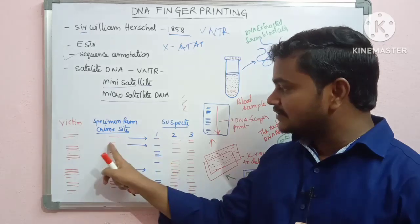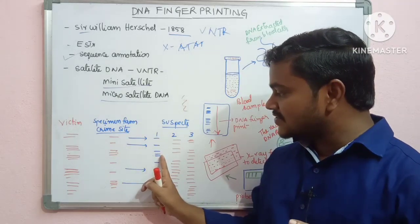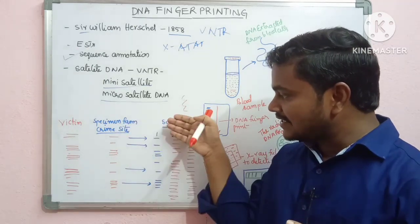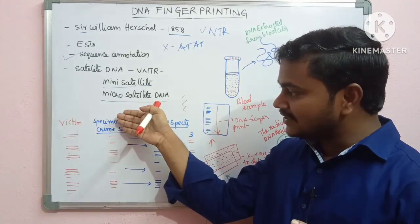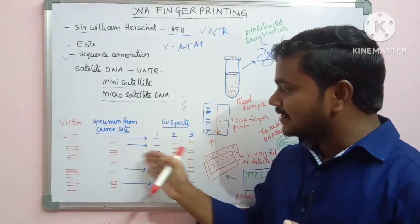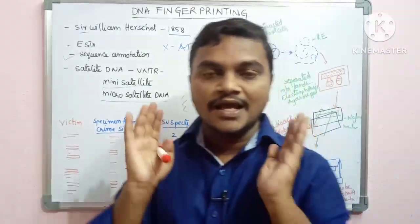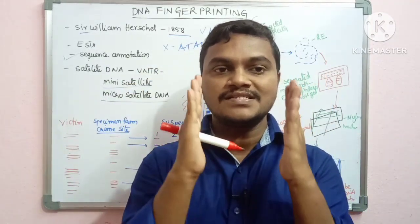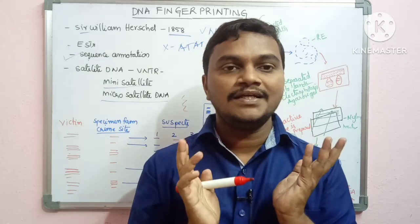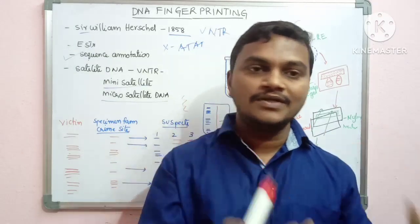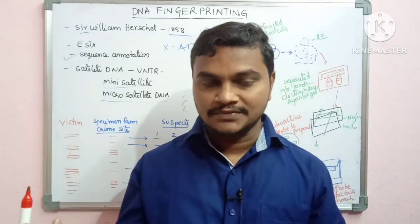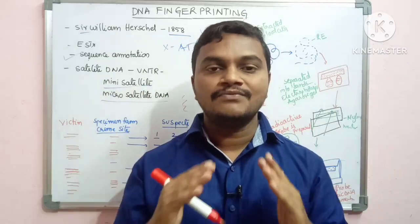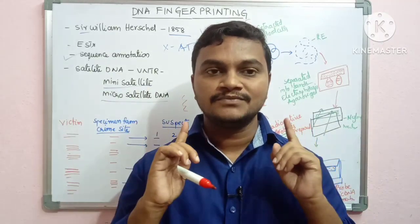The band patterns are equal — Suspect 1 has the same number of bands as the crime site sample: three bands match three bands, four bands match four bands. Suspect 1 is confirmed as the criminal by DNA fingerprinting. The technique works by comparing repetitive sequences between individuals.